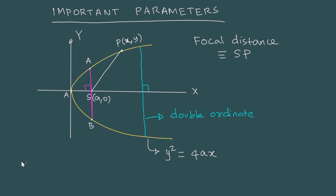This is important to keep in mind. What is latus rectum? Latus rectum is the distance between the two points on the parabola where a double ordinate through the focus cuts the parabola. We are simply taking a chord which passes through the focus perpendicular to the axis, and it cuts the parabola at points A and B. That distance AB is the latus rectum.